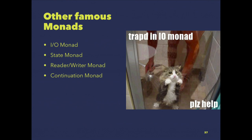There are other famous monads: the Maybe monad, the Result — which is the Either monad — and futures and promises. You can also check the IO monad in Swift, the State monad, Reader and Writer, and the Continuation monad. The State monad itself already says what it does. With Reader and Writer you can create validators or a very nice logging framework.